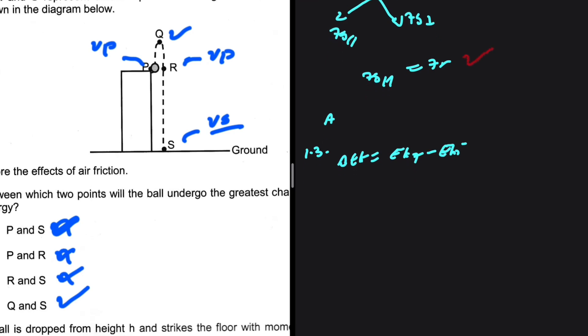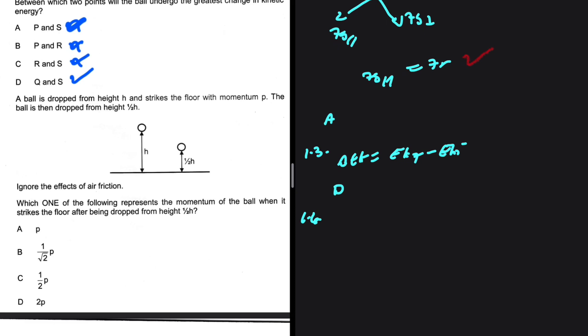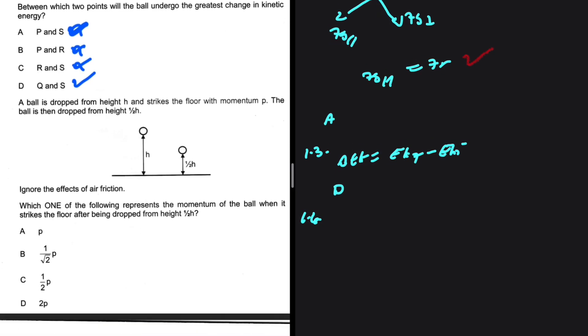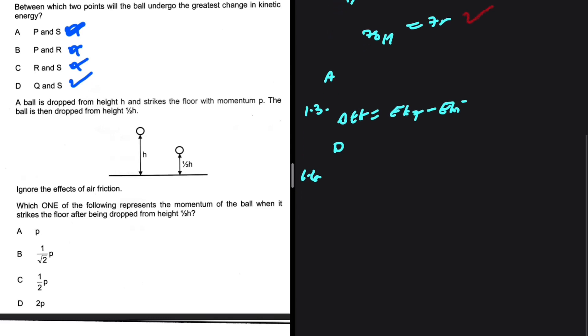1.4: A ball is dropped from height h and strikes the floor with momentum p. The ball is then dropped from a height of half h. Ignore the effects of air friction. Which one of the following represents the momentum of the ball when it strikes the floor after being dropped from height half h? We know that p equals m times v. m is not changing, what is changing is v. So we need to figure out how v is changing as a function of h.